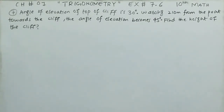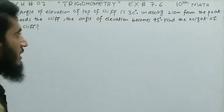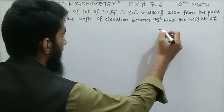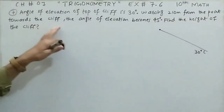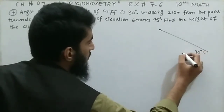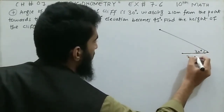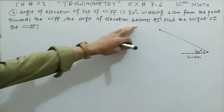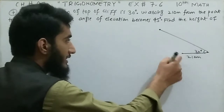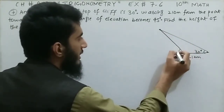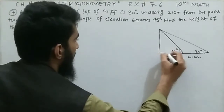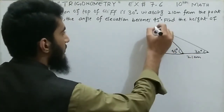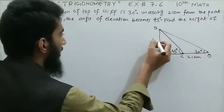Question number 7, the last part of Exercise 7.6: The angle of elevation of the top of a cliff is 30 degrees. Walking 10 meters from that point toward the cliff, the angle of elevation becomes 45 degrees. Find the height of the cliff. Let's label: A at the far point, C at the near point (after walking 10m), D at the base of the cliff, and B at the top. The vertical height is what we find.